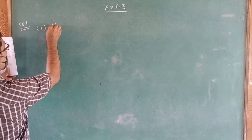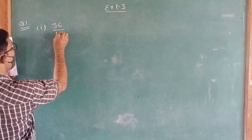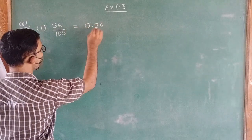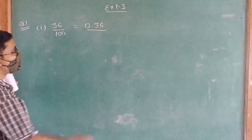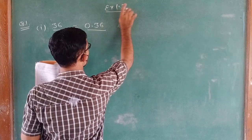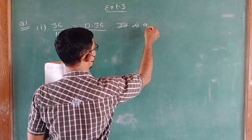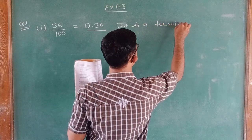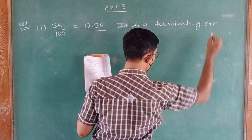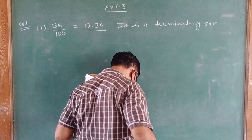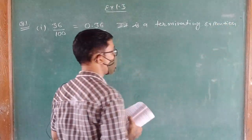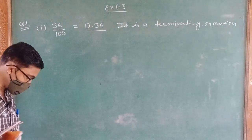तो first question: 36 upon 100. So, we can write it as 0.36. It is a Terminating Expansion.